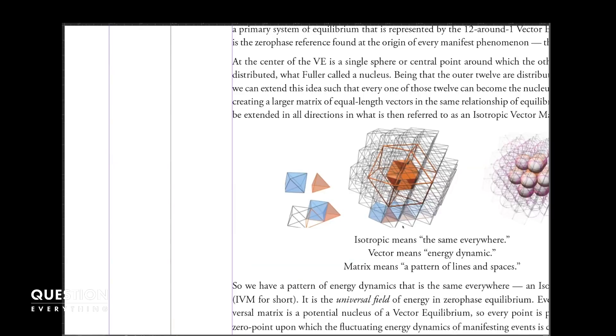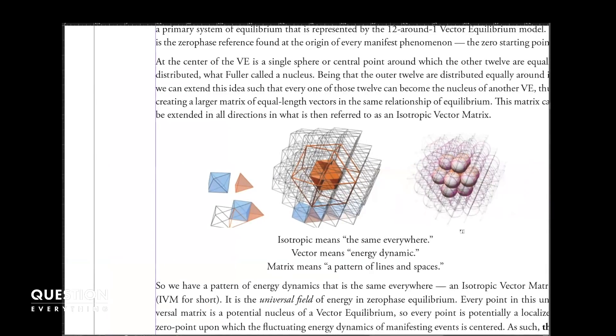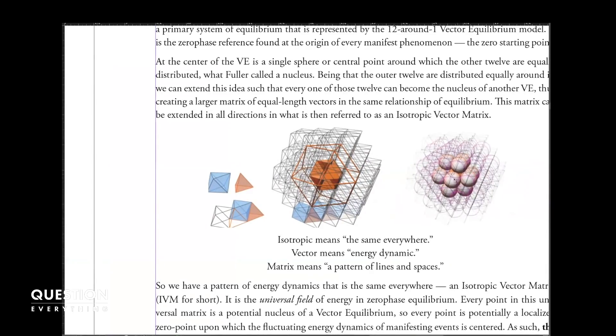That's what's called the isotropic vector matrix, or the IVM to make it a lot easier to talk about. The way Buckminster Fuller worked with this geometry was to, or even discovered this initially, was that he was working with sphere packing, because universe likes to make spheres. You go to the ocean and you see bubbles, billions upon billions of little spheres, and you see planets and stars and everything.